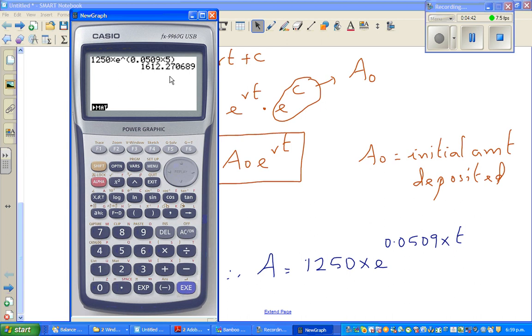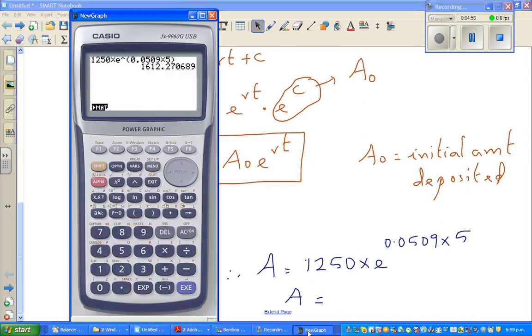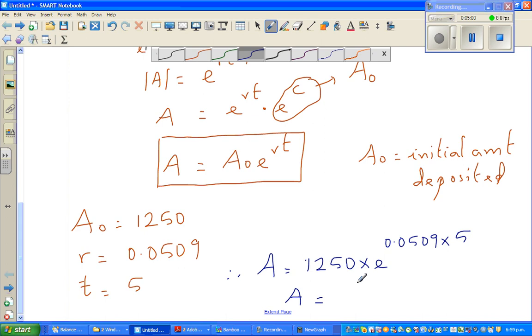This should be 5 here. So your amount after 5 years is $1,612.3 in one decimal place.